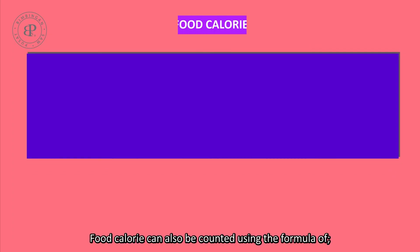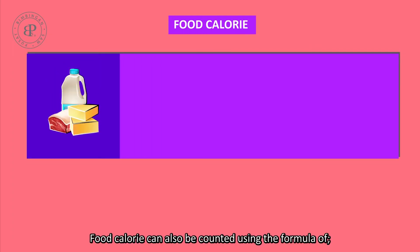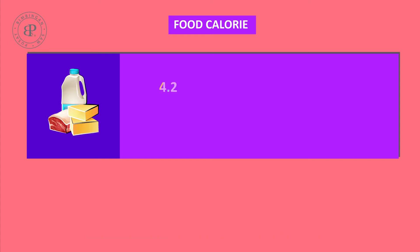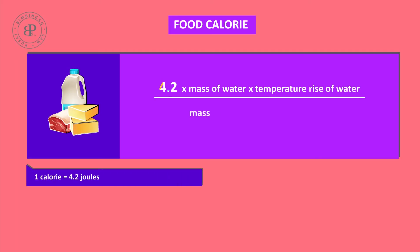Food calorific value can also be calculated using the formula: 4.2 times the mass of water and the temperature rise of water, over the mass of the food sample, times 1,000.